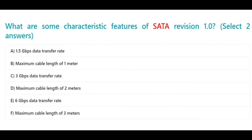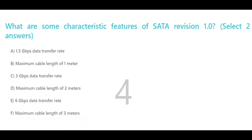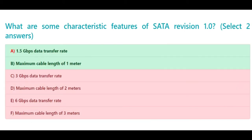What are some characteristic features of SATA Revision 1.0? Select two answers: a. 1.5 Gbps data transfer rate, b. maximum cable length of 1 meter, c. 3 Gbps data transfer rate, d. maximum cable length of 2 meters, e. 6 Gbps data transfer rate, f. maximum cable length of 3 meters. The correct answers are a. 1.5 Gbps data transfer rate and b. maximum cable length of 1 meter.